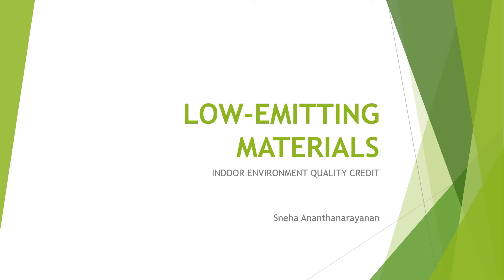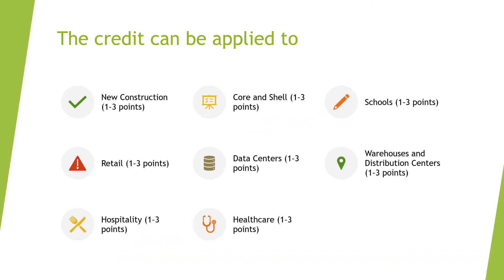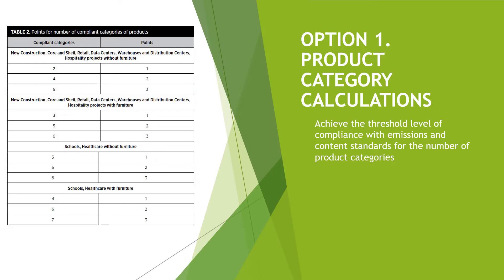We're going to talk about low emitting materials that contribute to the indoor environment quality credit. The intention of this credit is to reduce concentration of chemical contaminants that can damage air quality, human health, productivity, and the environment. This credit is worth one to three points and can be applied to various building typologies.